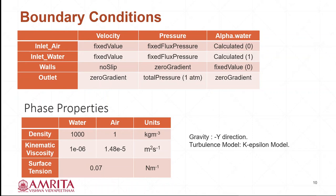Coming to phase properties, the density of the water and air is tabulated and the surface tension is 0.07 Newton per meter at 25 degrees centigrade. In the present study, we use the k-epsilon model as the turbulence model and the gravity is in minus y direction.